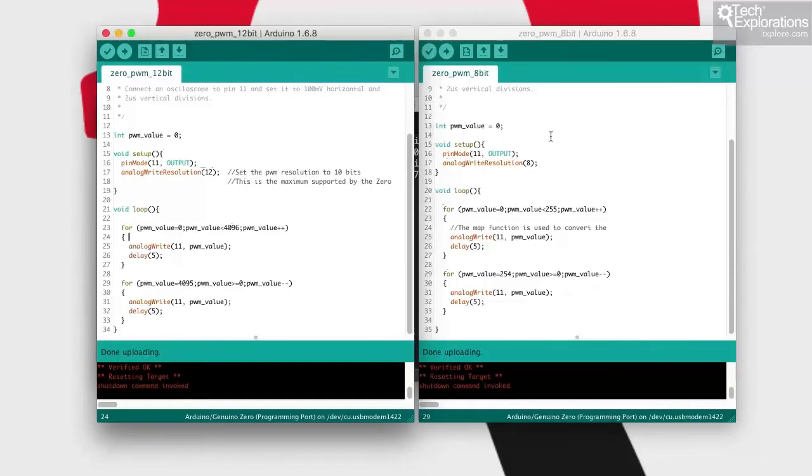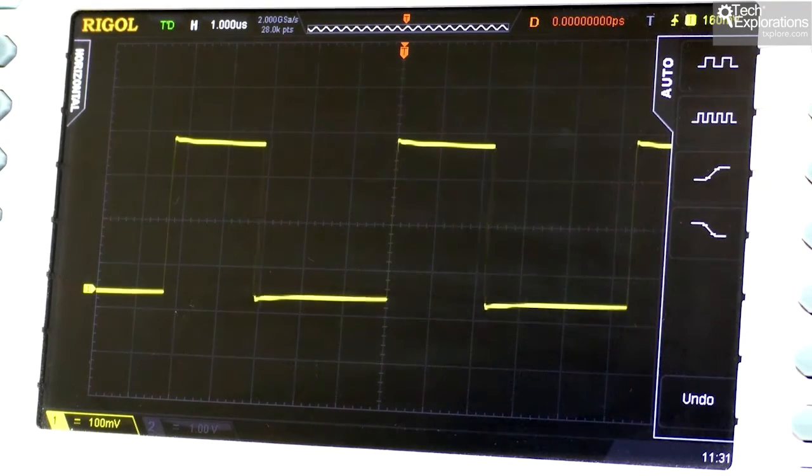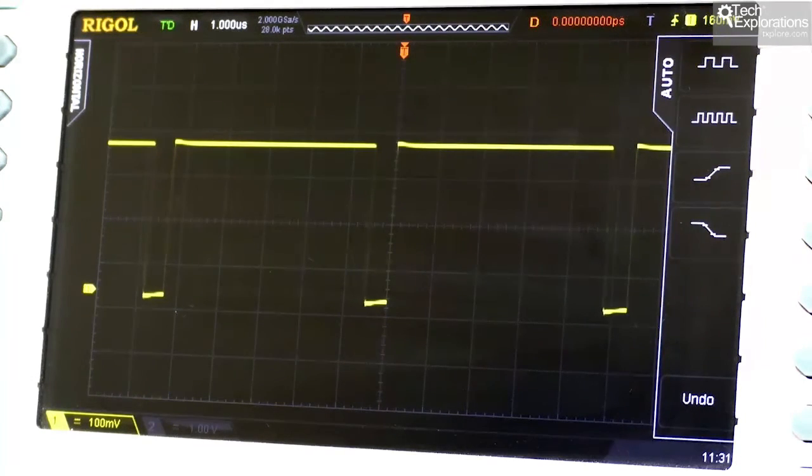Okay, there you go. So that's what 12 bits of resolution look like. We now have to go through 4095 different steps in the two loops, so it takes longer for the full duty cycle to appear on the oscilloscope.